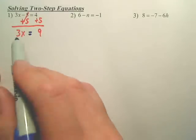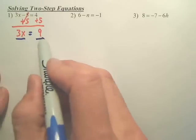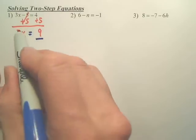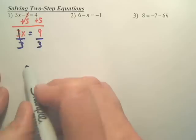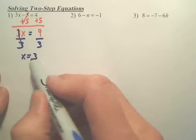To solve for x, this is 3 times x. The opposite of times is divide. So what you're going to do is divide by 3. And for your second step, 9 divided by 3 is 3.